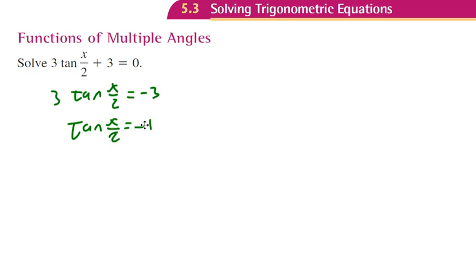Now we haven't done anything like this yet, where we take the tangent of something other than a single variable. Now we have x over 2. Here's how we'll handle this: let's pretend this is a single entity, like tangent of theta equals negative 1. We're going to replace x over 2 with theta.